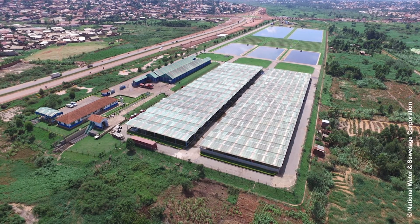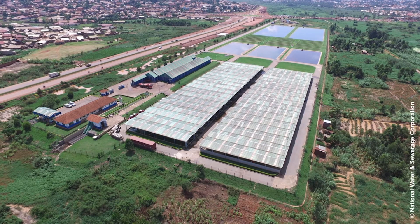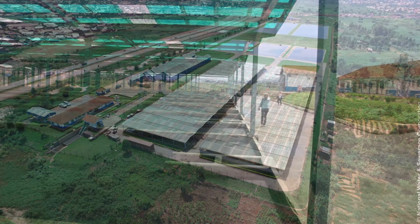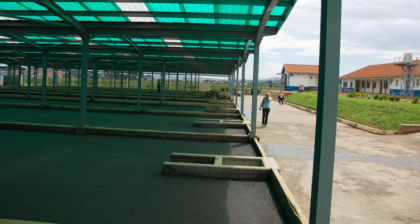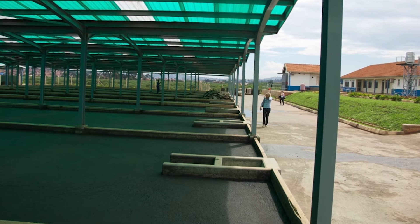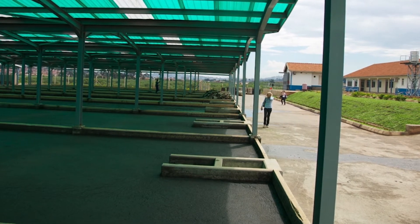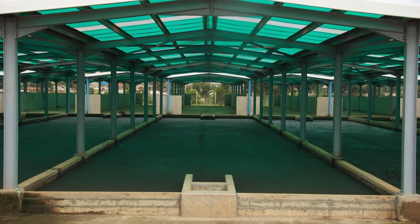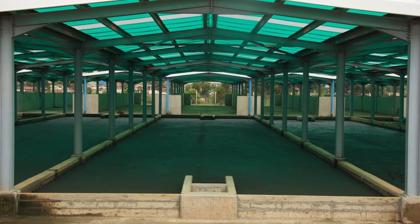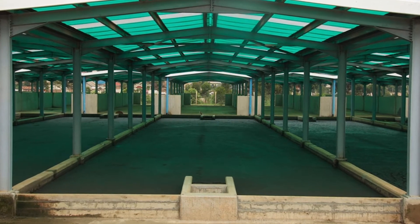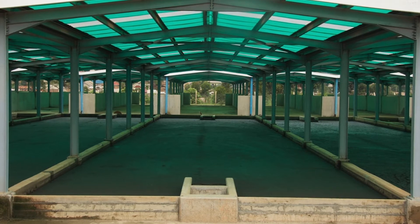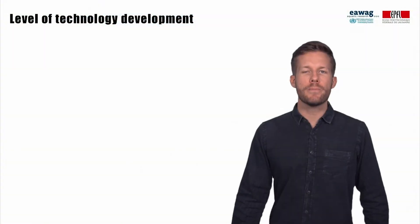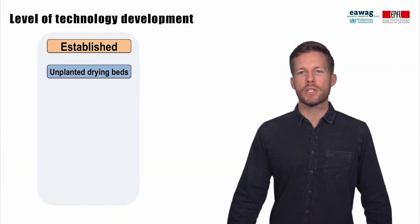Here is an example of a full-scale construction and operation of drying beds for fecal sludge treatment in Kampala. Examples like this provide further information, for example on how to best remove sludge from drying beds, or on dewatering and drying times. Such information can then improve further treatment designs and operations. We call technologies with this level of development and operating experience established technologies.